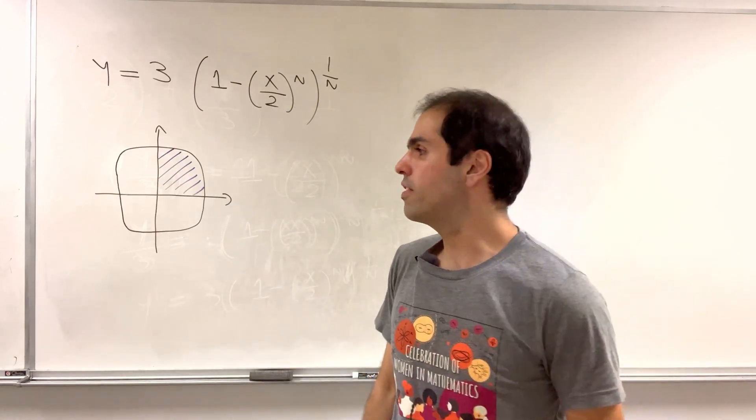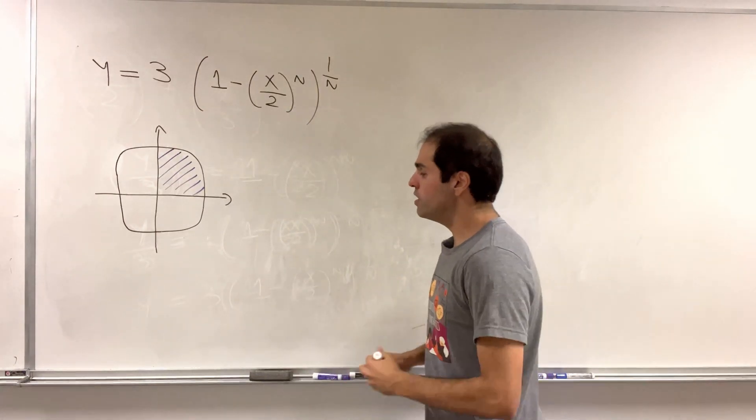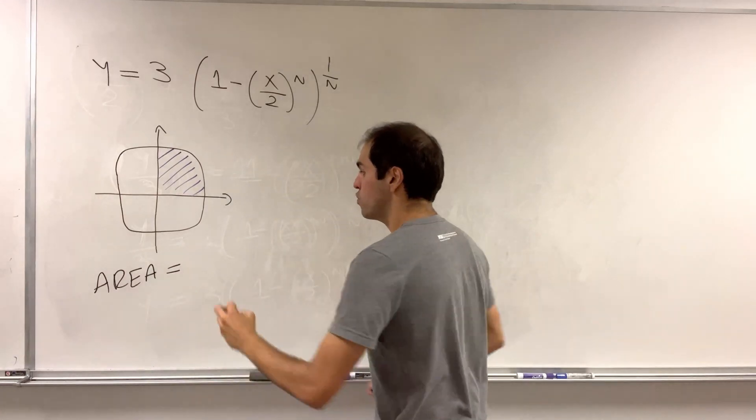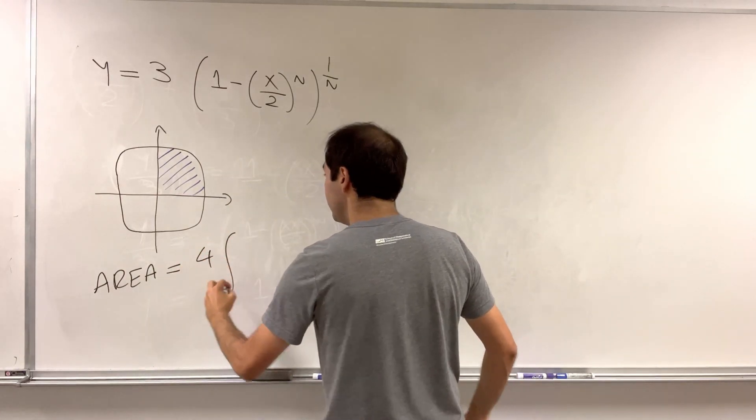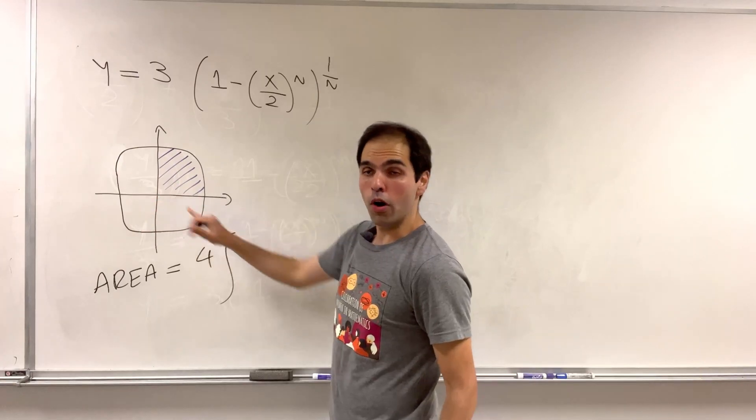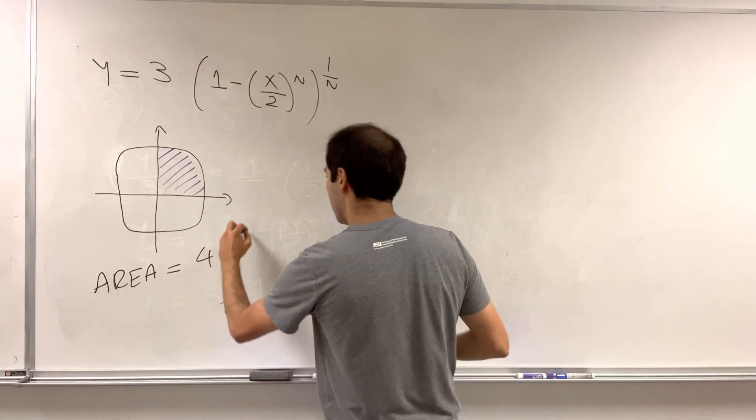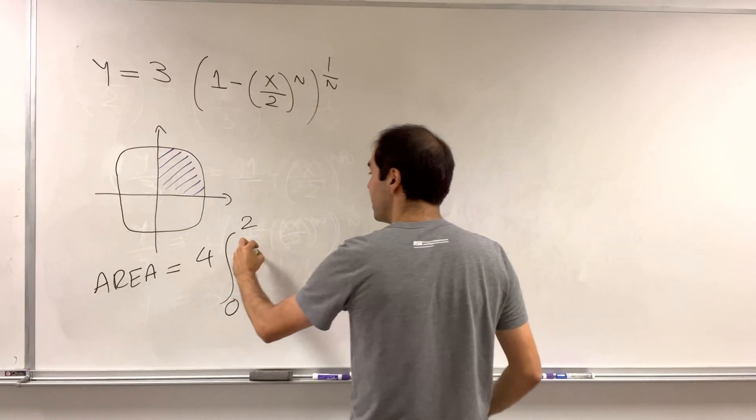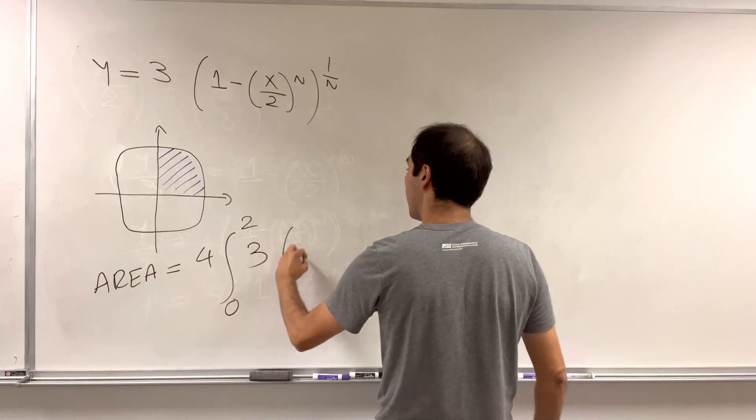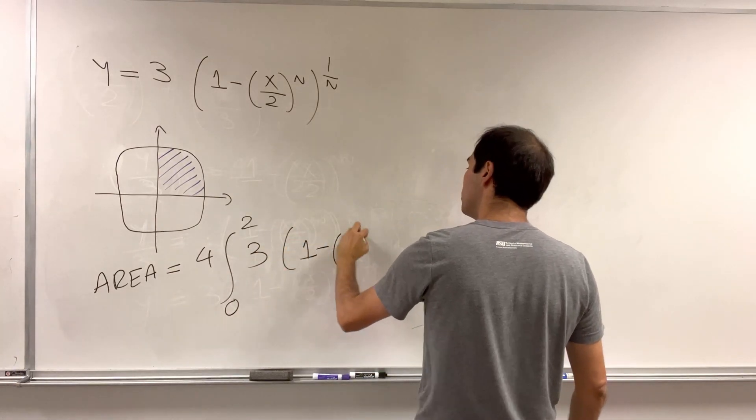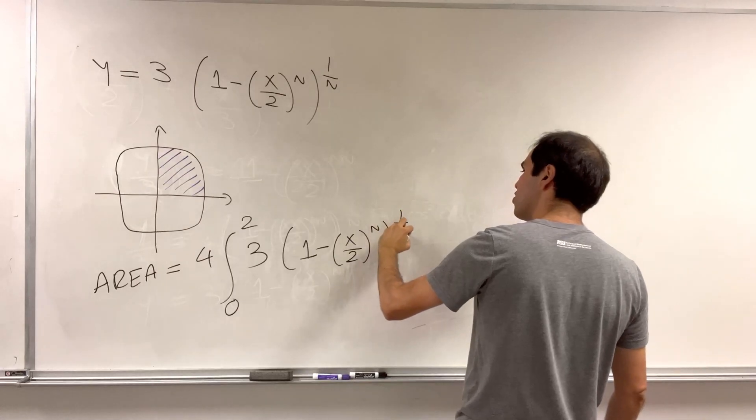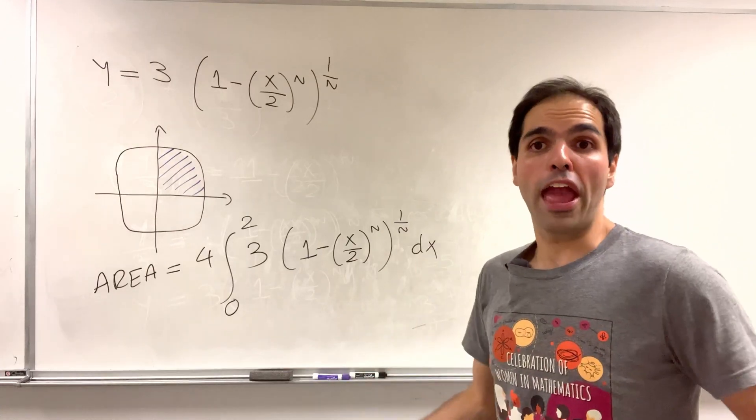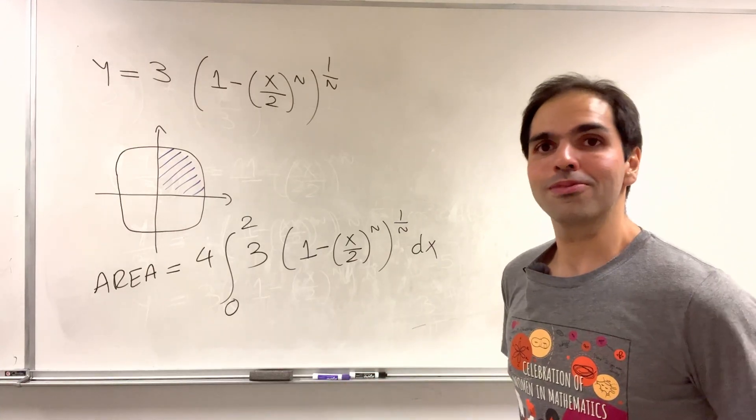This is why you can assume everything is positive, and so the area that we want is just four times the integral from 0 to 2. Why 2? Because that's what makes y equal 0. Of y dx, which is 3 times 1 minus x over 2 to the n of 1 over n dx. So once we calculate that integral, we have the area of our super ellipse.